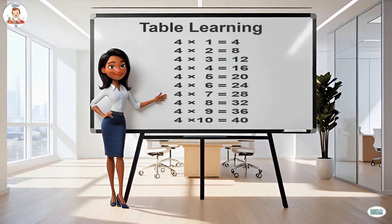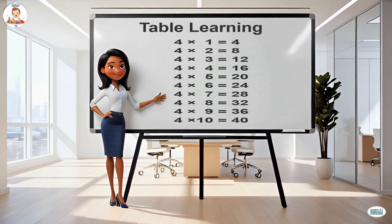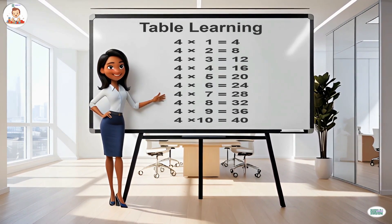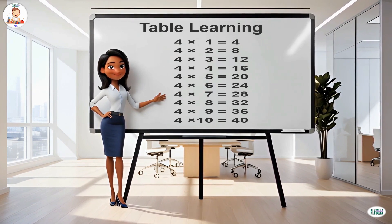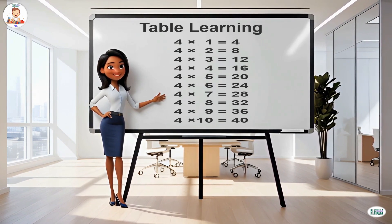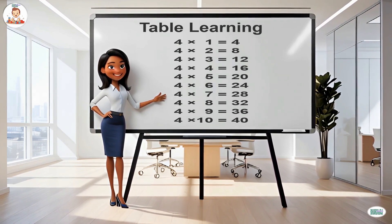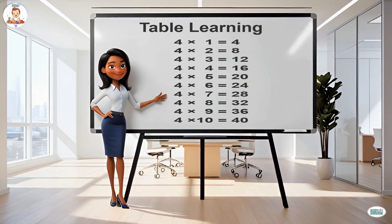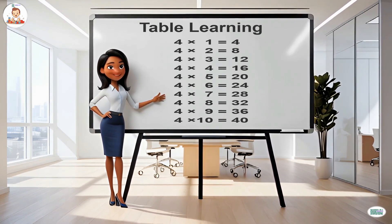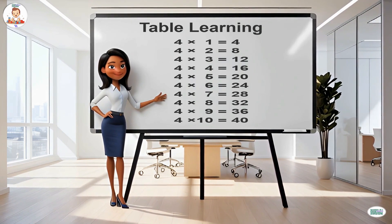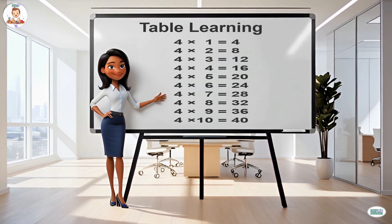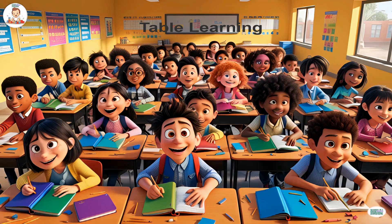Four fives are twenty, four sixes are twenty-four, four sevens are twenty-eight, four eights are thirty-two, four nines are thirty-six, four tens are forty. Now let's start the table of five.